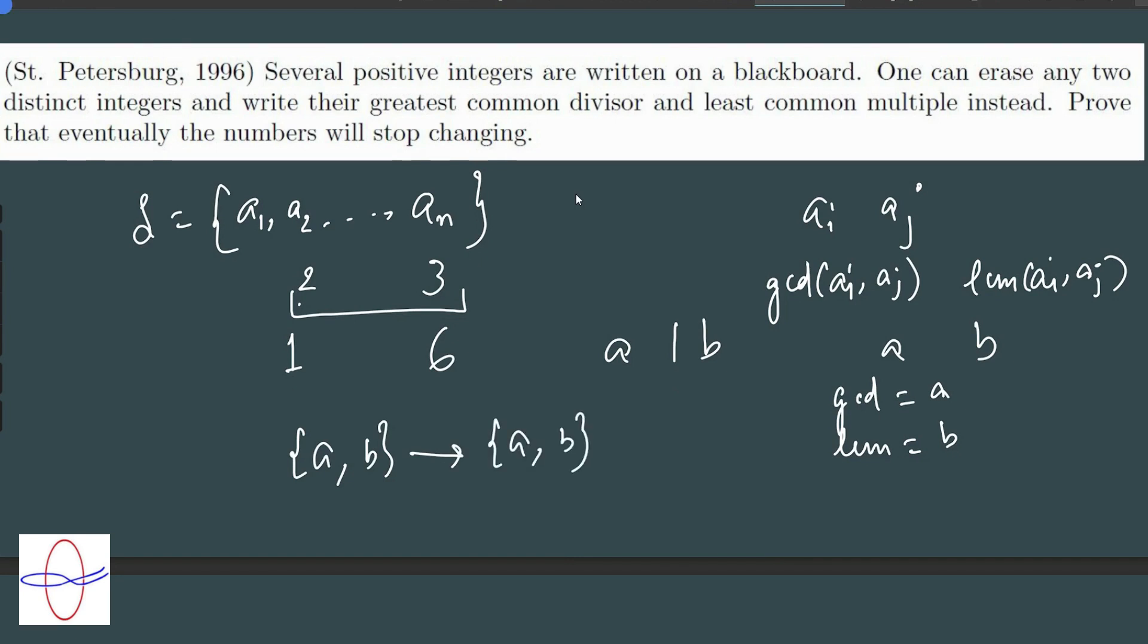So this gives us an idea that the only way the set will stop changing is if eventually for all A less than or equal to B, A has to divide B. So this gives us an idea.